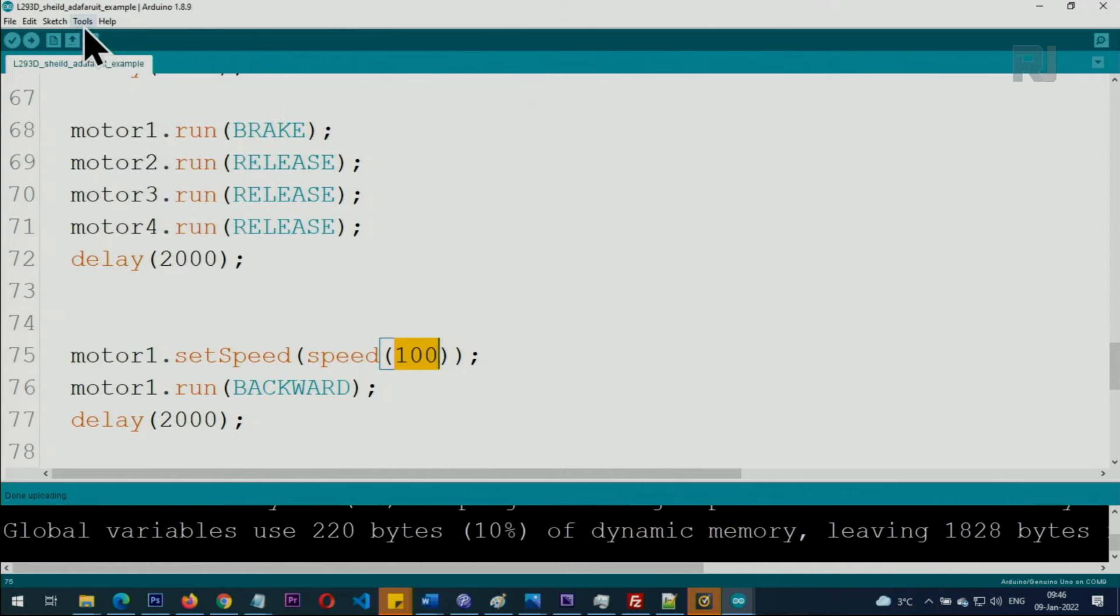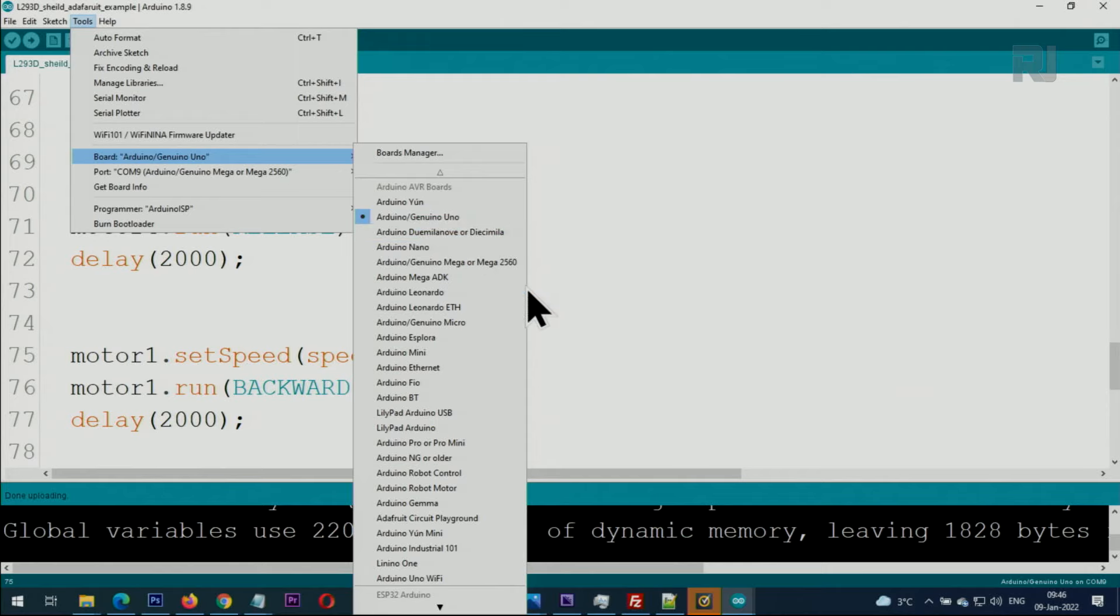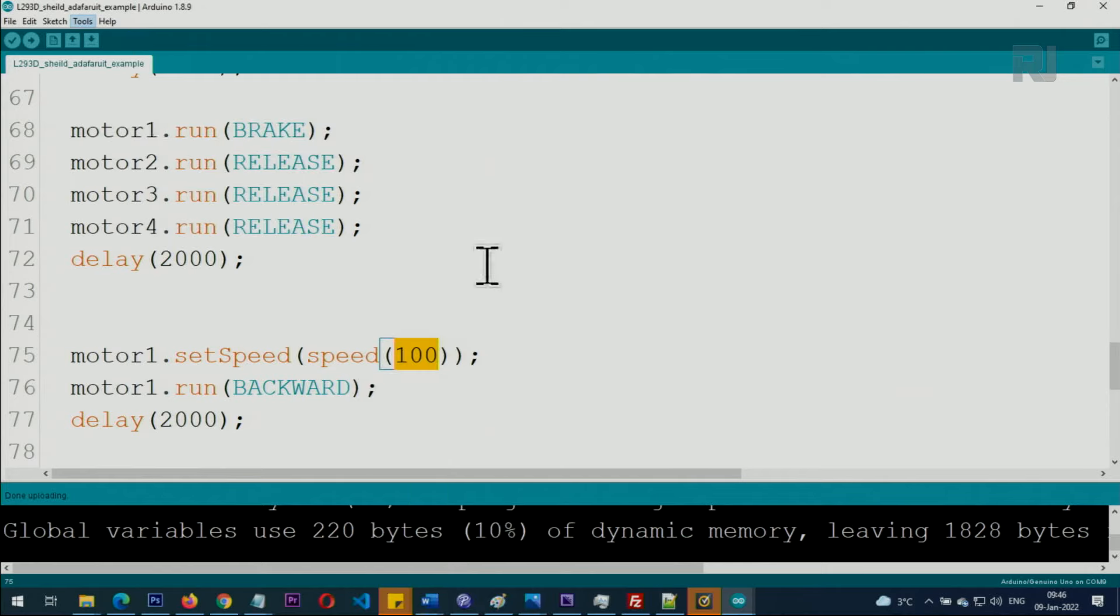And go to Tools, Board Manager. From here select Arduino Mega 2560.